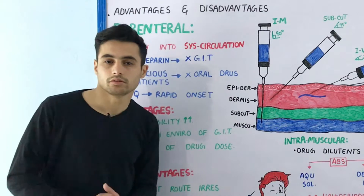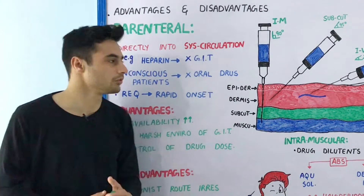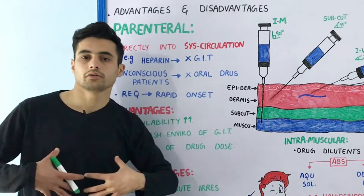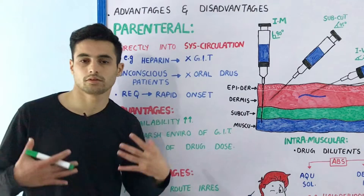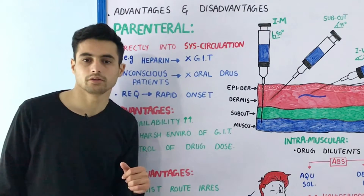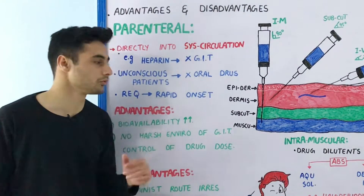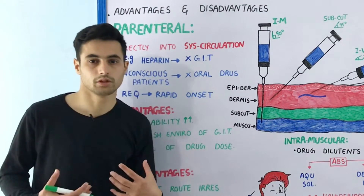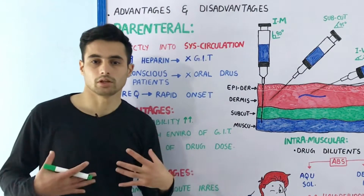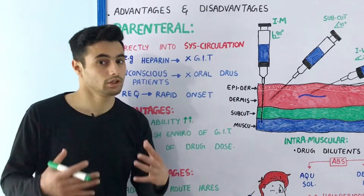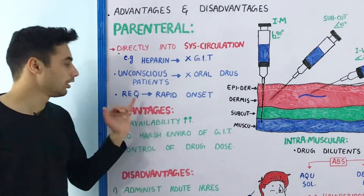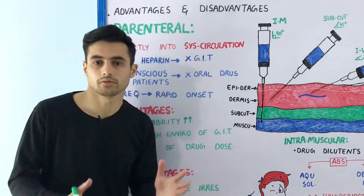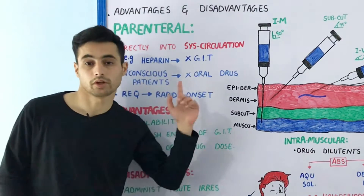There are three major reasons why we use the parenteral route. First, some drugs like heparin cannot tolerate the harsh acidic environment of your gastrointestinal tract, so we inject it through the parenteral route. Sometimes the patient is unconscious and you cannot give the drug orally because the medication may go into the lungs or trachea and cause blockage. And in emergency situations, we require rapid action of the drug.